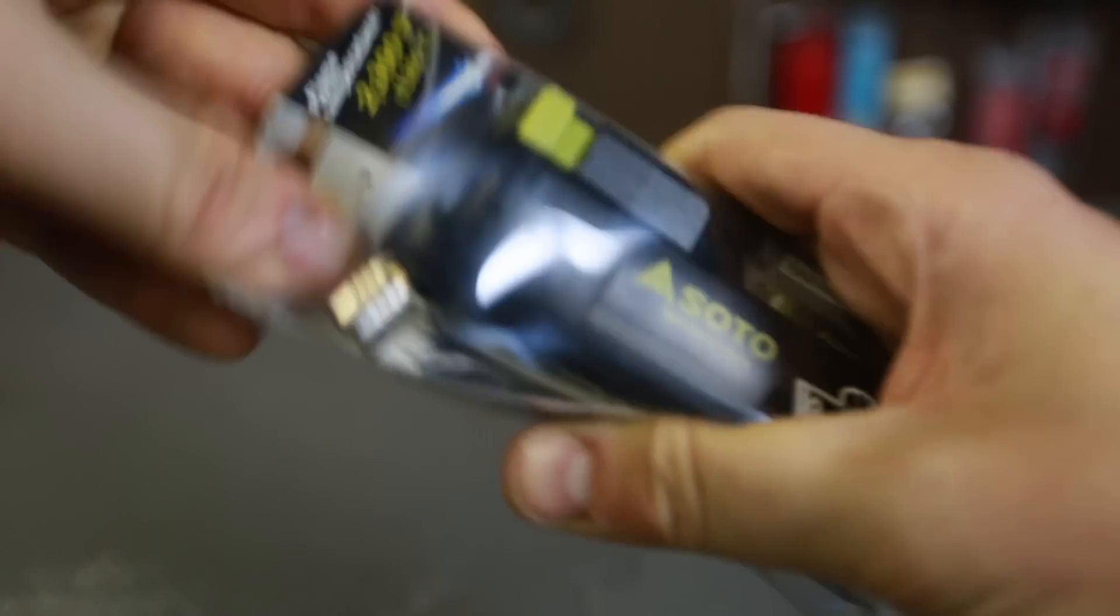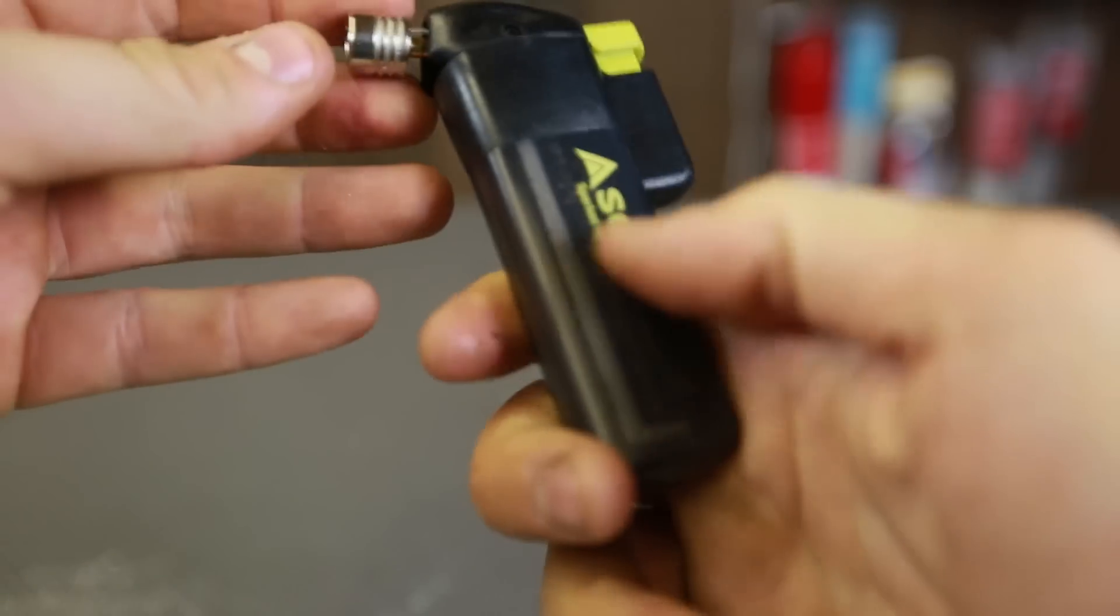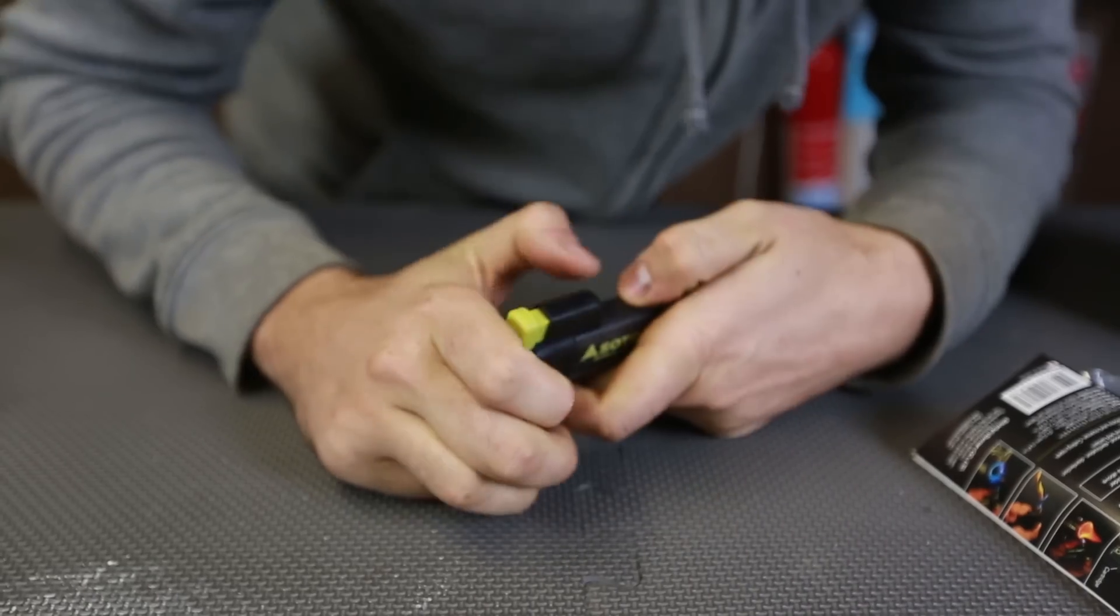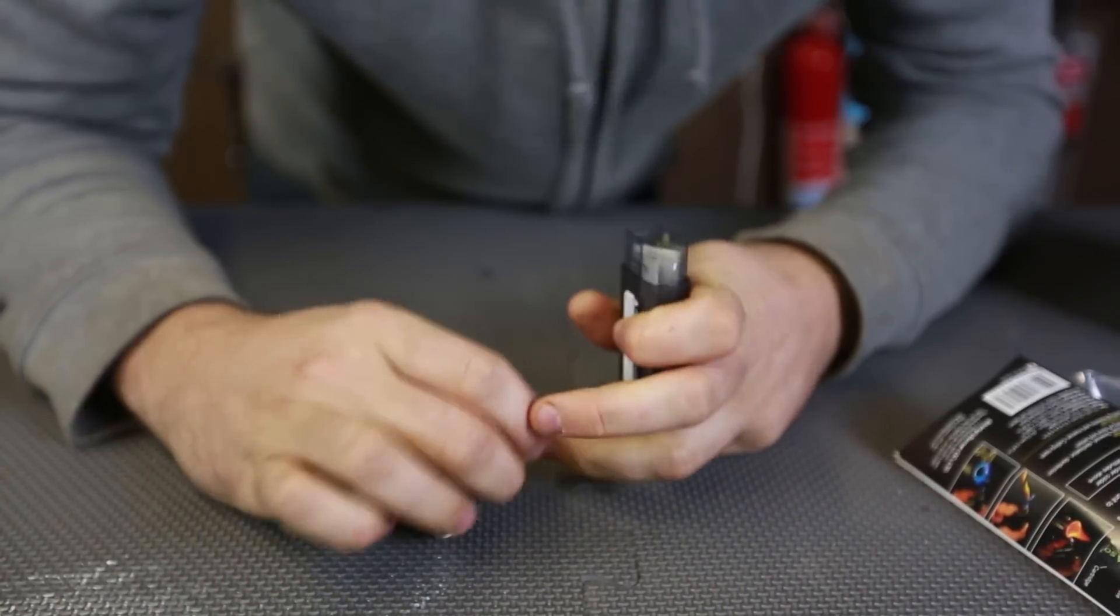Here's a SOTA mini torch. Does it come with the lighter already? Let's find out. Looks like it doesn't turn on. Just pulls it out. Boom.